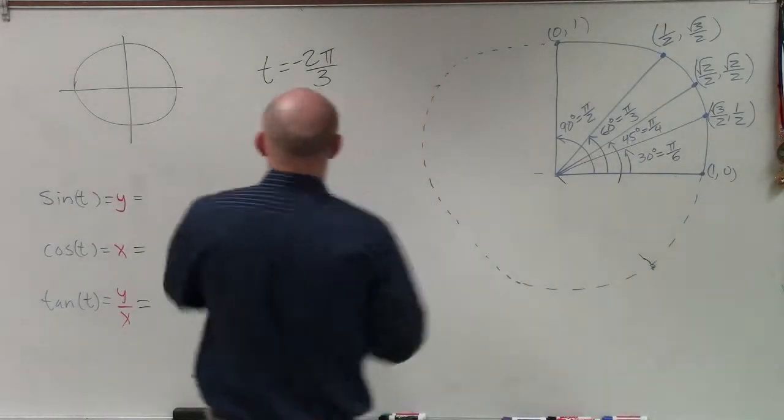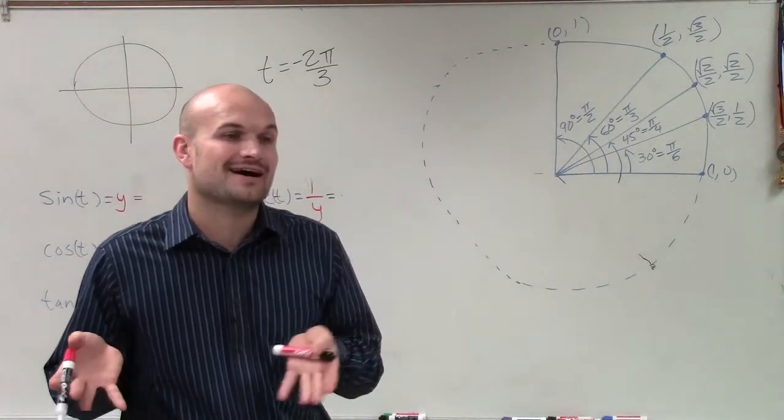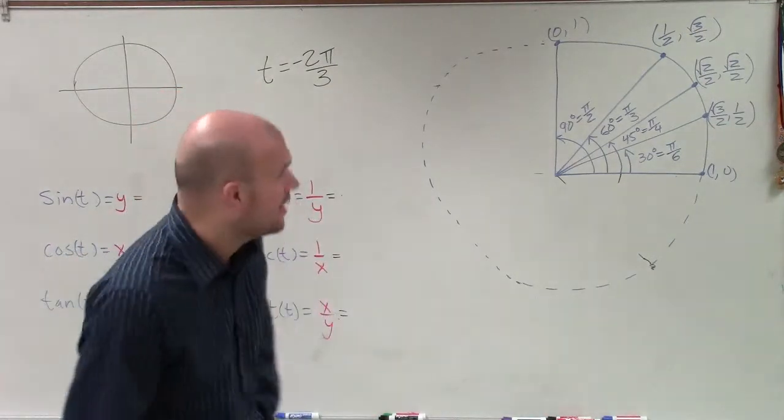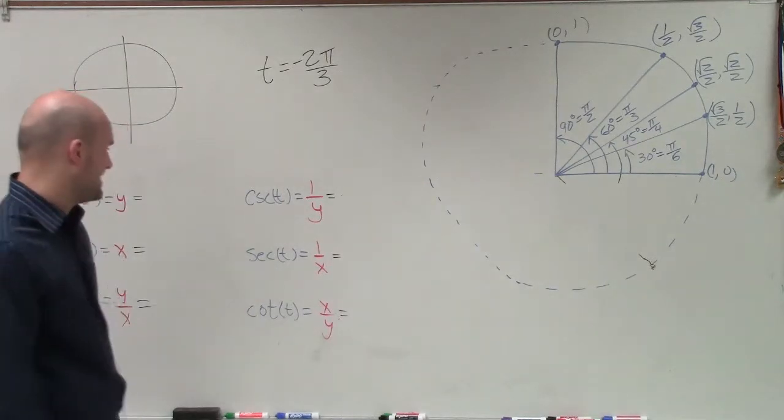Welcome. All right. So what we have is the angle negative 2π over 3. And what I want to do is take this angle to evaluate my six trigonometric functions, which are going to be sine, cosine, tangent, and then the reciprocals, cosecant, secant, and cotangent.